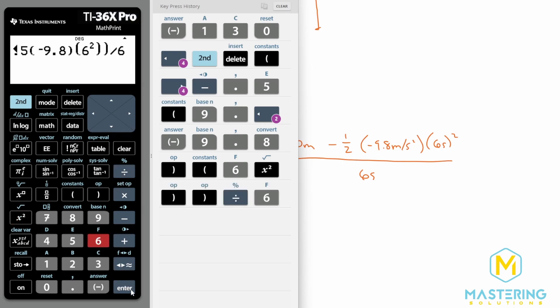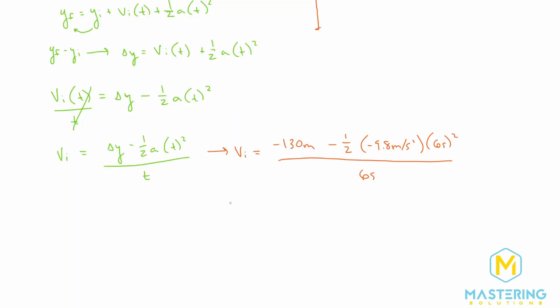And now we'll divide that all by 6 seconds, which is going to give us 7.7. So the initial velocity that the helicopter was going was 7.7 meters per second.